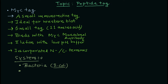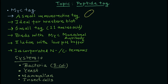The systems you can use with the myc tag include bacteria, yeast, mammalian cells, or insect cells. You can use the myc tag with all of these expression systems and it should work fine. It is an 11 amino acid tag that you incorporate into your gene of interest.